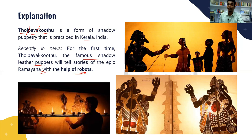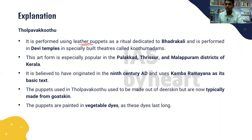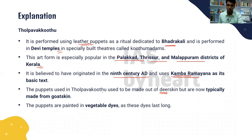The word 'Thol' means skin, 'Pava' or 'Bavum' means expressions, and 'Koothu' means a fun activity. Thol Pavakku Koothu is performed using leather puppets and is a ritual dedicated to Goddess Bhadrakali in Devi temples. It is believed to have originated in the 9th century and mostly uses sub-stories from the Ramayana. The puppets were traditionally made from deer skin but are now typically made from goat skin and painted in vegetable dyes, which last long.